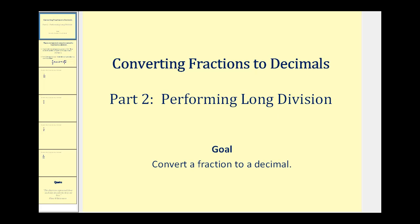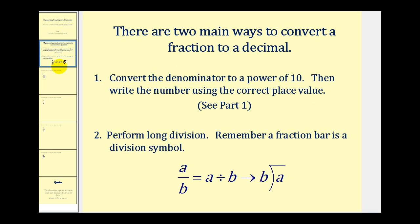Welcome to part two of converting fractions to decimals. In this video we'll take a look at converting fractions to decimals by performing long division. There are two main ways to convert fractions to decimals without a calculator. Number one is to convert the denominator to a power of ten and then write the number using correct place value — this was covered in part one. The second way, covered in this video, is to perform long division.